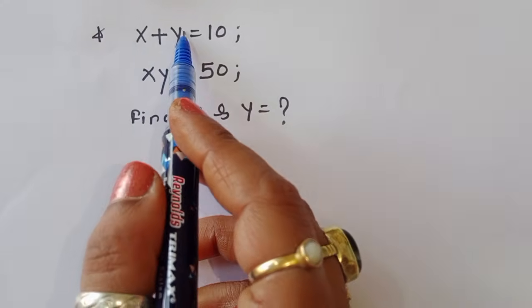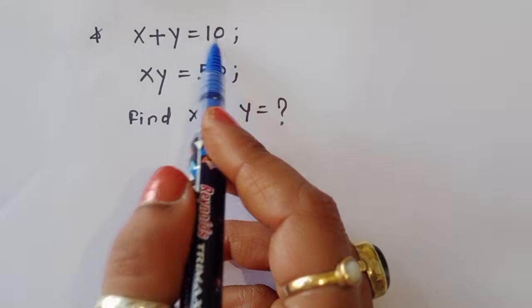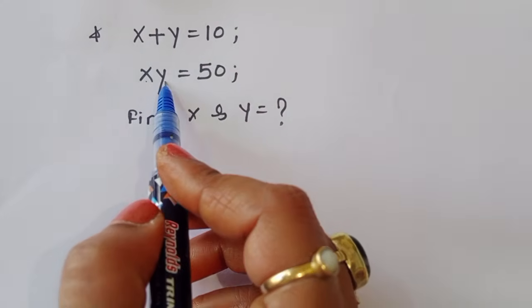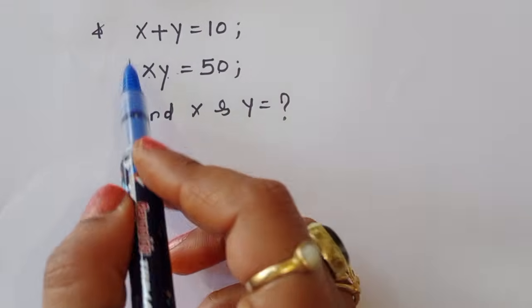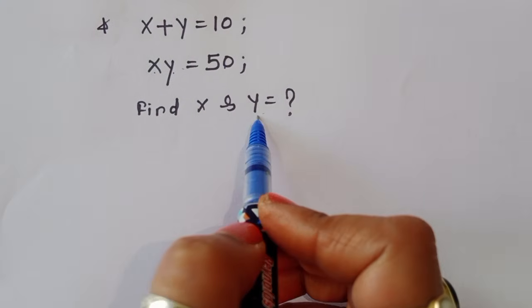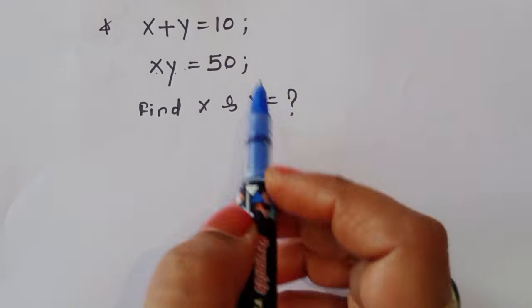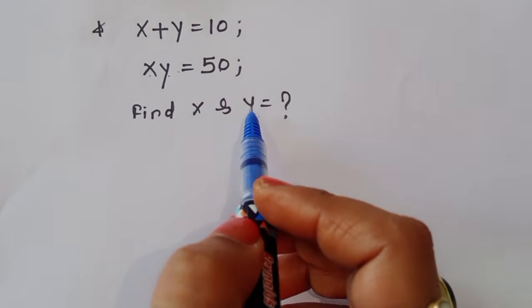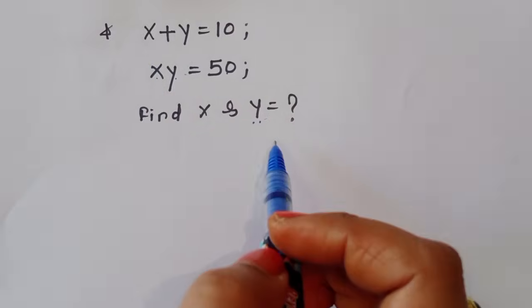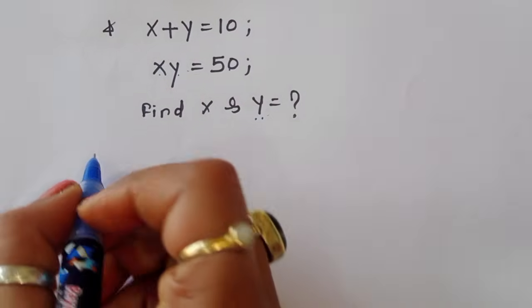The question is: given x plus y is equal to 10 and x times y is equal to 50, we have to find out the value of x and y. Let's see the solution.